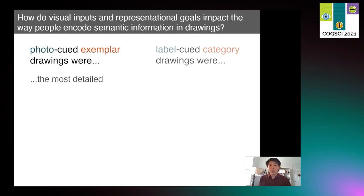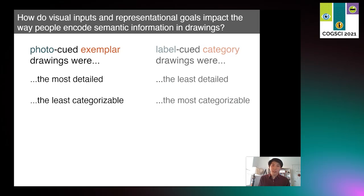So what did we learn about our ability to convey semantic information about drawings across different levels of abstraction? Well, for photo-cued exemplar drawings, we found that despite producing the most detailed drawings of all conditions, these exemplar drawings are also the least categorizable. By contrast, we found that label-cued category drawings were the least detailed, and yet for all conditions they are also the most categorizable. Hypothesizing that this classifiability may be due to some systematicity in drawing features across different people trying to convey category information, we then looked at how variable these drawings in each of the conditions were. And indeed, we found that label-cued category drawings displayed the least variability across all conditions, supporting this notion of systematicity in abstraction.